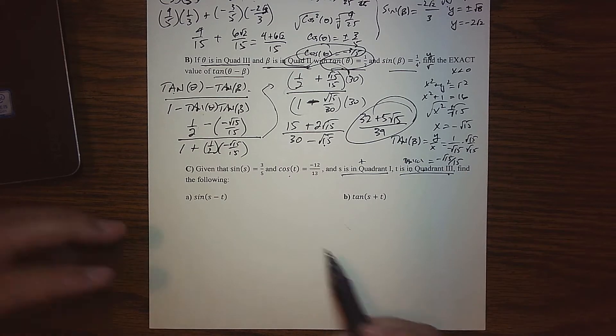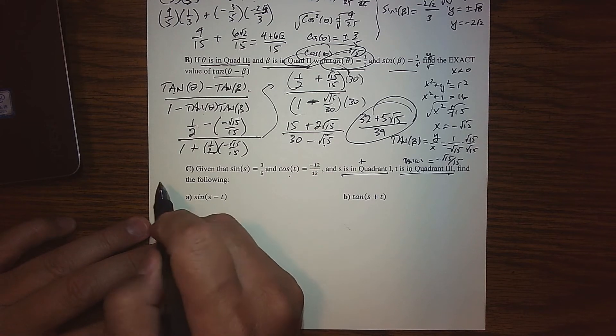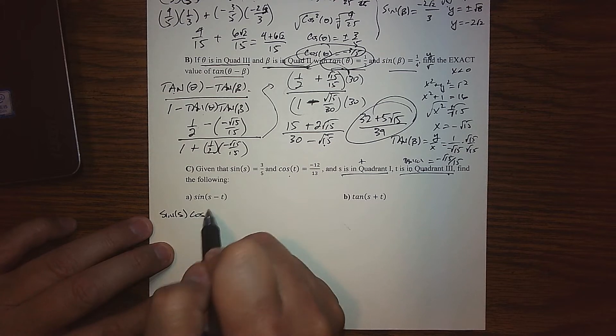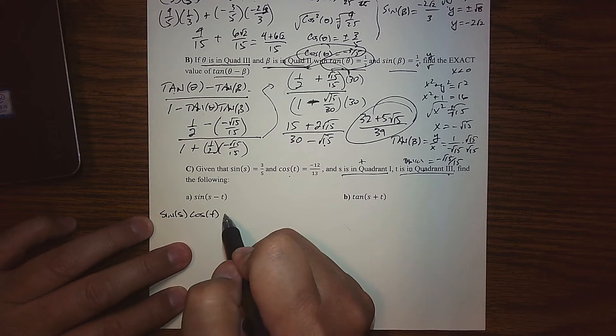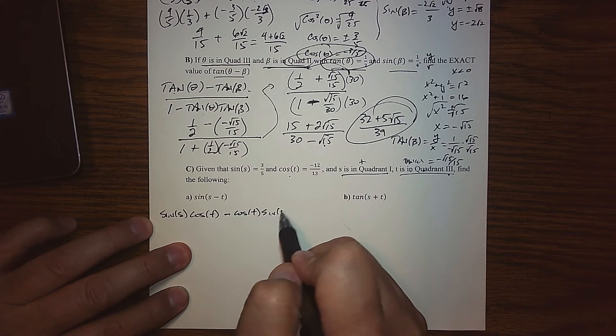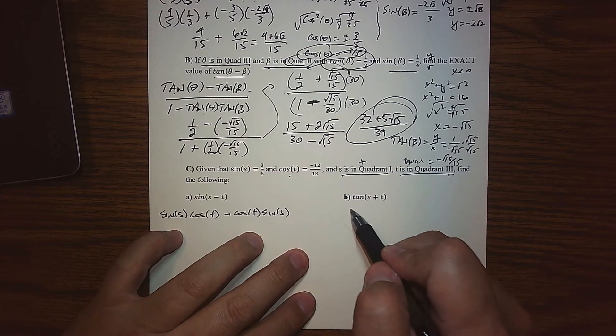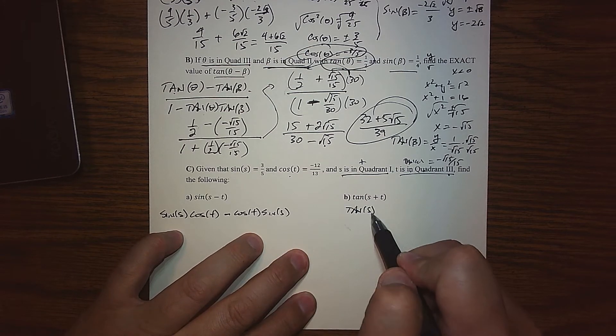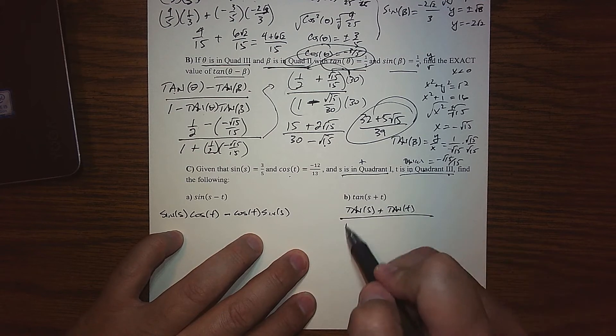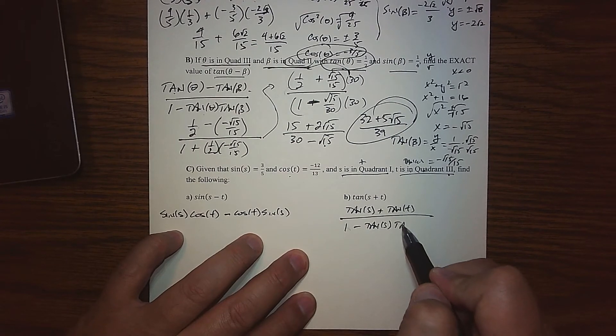So to find the sine of s minus t, when we use the identity, this becomes the sine of s, the cosine of t, and then minus the cosine of s and the sine of t. So we basically have to go find that, and then the same thing over here. Here, this is the tangent of s plus the tangent of t all over 1 minus the tangent of s tangent of t.